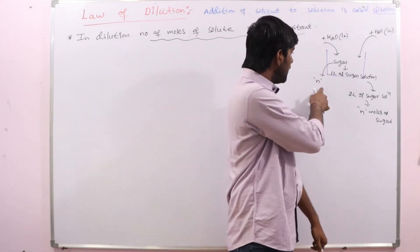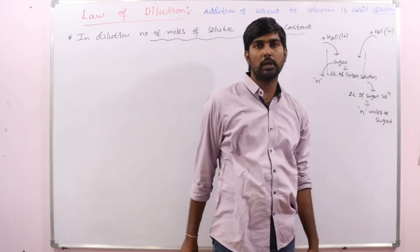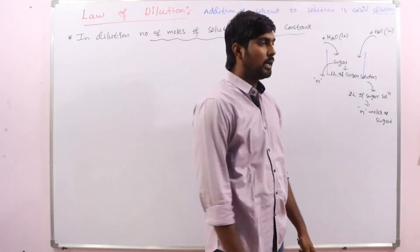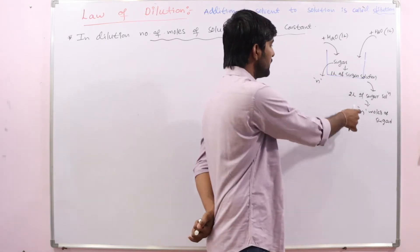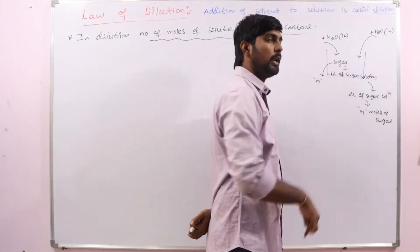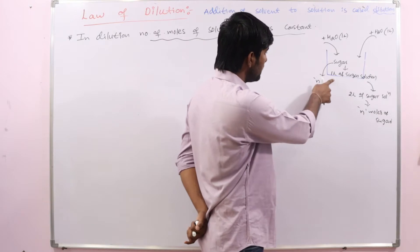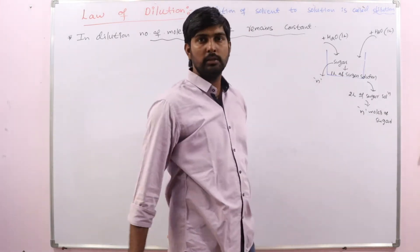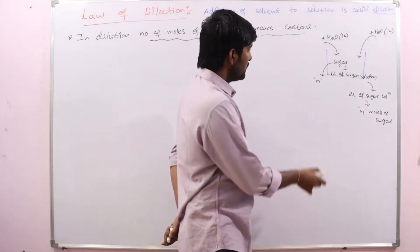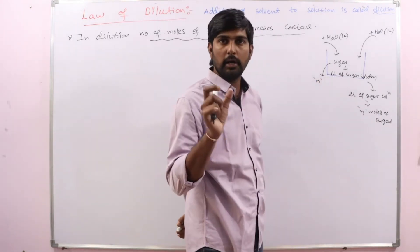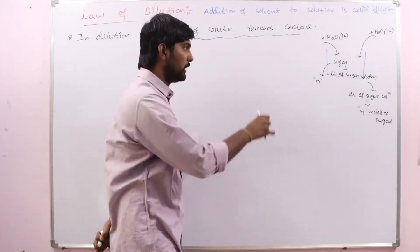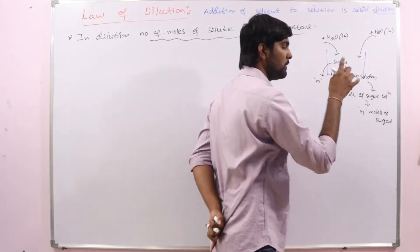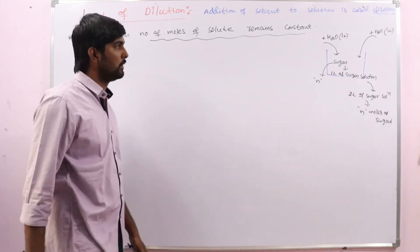Here also we have n moles, and here also we have n moles of solute, but the concentration is changing. In 1 litre, n moles is present; in 2 litres, n moles is present. Here the sweetness is different — there is less sweetness when compared to the first case. Now this first prepared solution is called the concentrated solution, and after adding solvent, the formed solution is called the diluted solution.